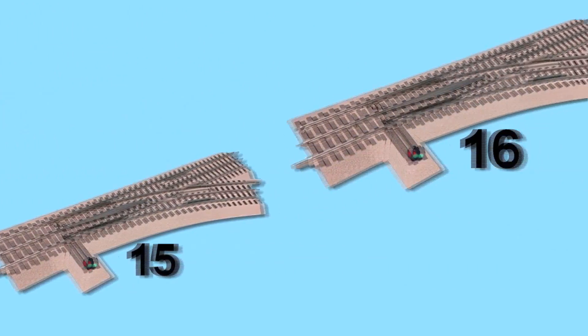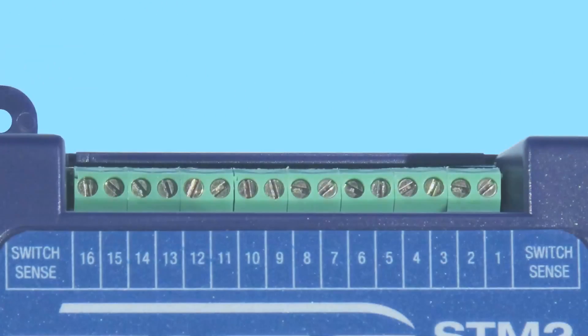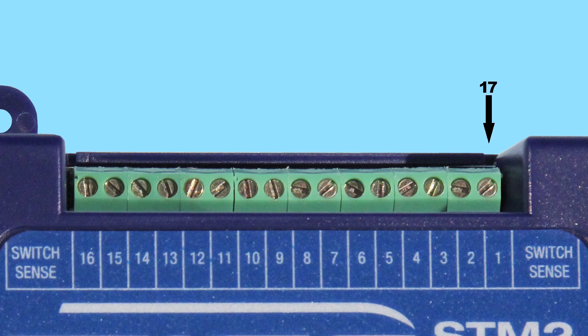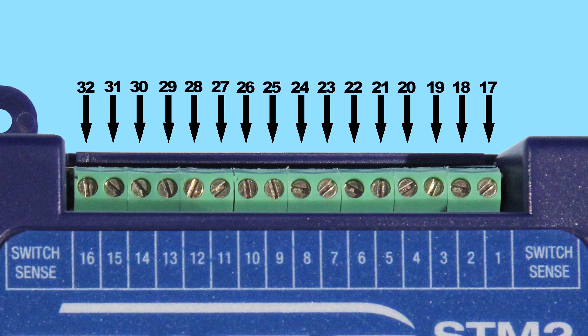If you program an STM2 with the number 17, which must correspond with the ID number of the first switch connected to the module, the remaining 15 ID numbers follow consecutively.